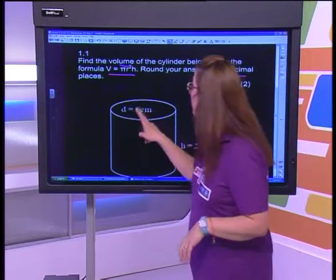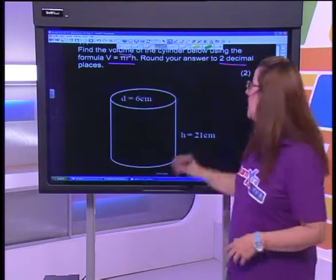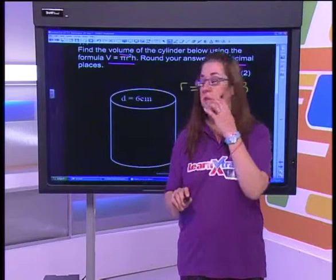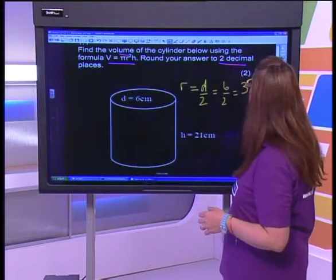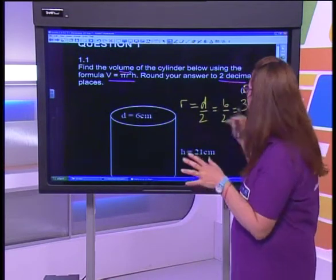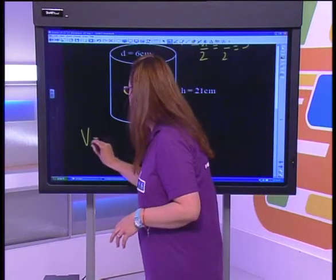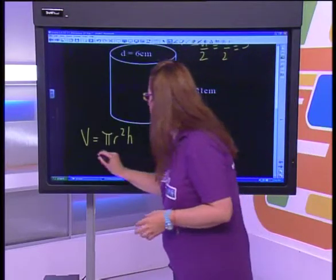So what do we have? We have our diameter — 6 centimetres — and our height is 21 centimetres. Whenever I have a diagram like this, I like to calculate the radius. My radius is my diameter divided by 2, which is 6 divided by 2, so my radius is 3. I always put my radius into my picture. Now, look out for the fact where they say use π = 3.14, because if they use that, that's what they want you to use. It's always better to have the same answer as the teacher's memo.